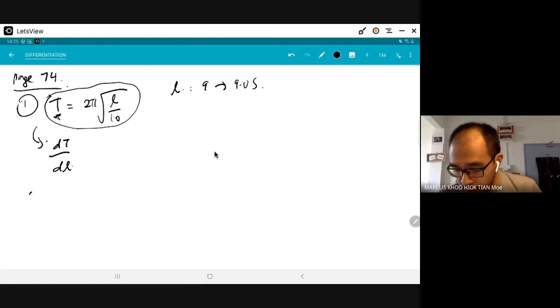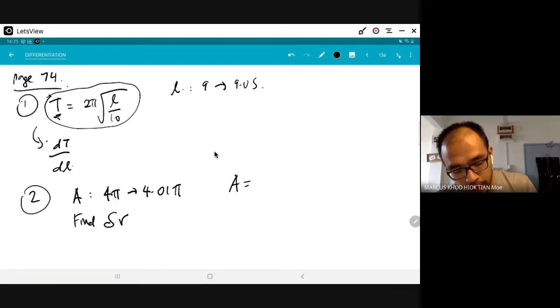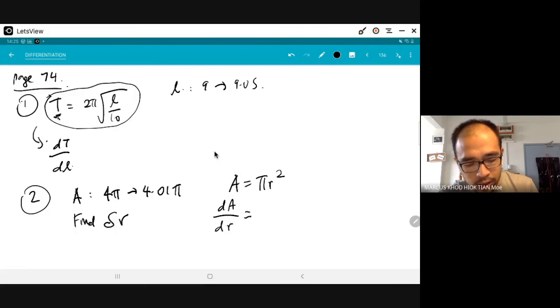Question number 2. The area of a drop of oil which spreads out in a circle increases from 4 pi to 4.01 pi. Okay, find the corresponding small change in the radius. So, what are we supposed to find? Del r. Okay. Formula for area of a circle, please, somebody. Pi r squared. A equals to pi r squared. So, the differentiation of this will be known as what? D what, D what? D, A, D, R. Okay, D, A, D, R. What is the equation of D, A, D, R? 2 pi r. 2 pi r. Okay.